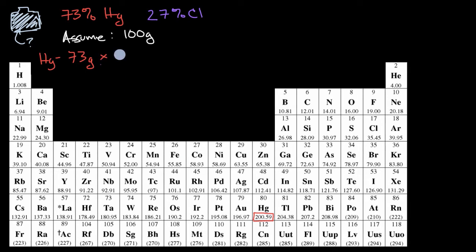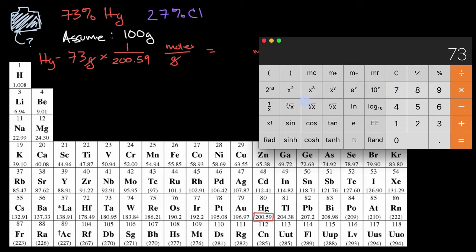So we could multiply this times 1 over 200.59 moles per gram. And so when we multiply this out, the grams will cancel out, and we're just going to be left with a certain number of moles. So I'll take 73 and we're just going to divide it by 200.59.